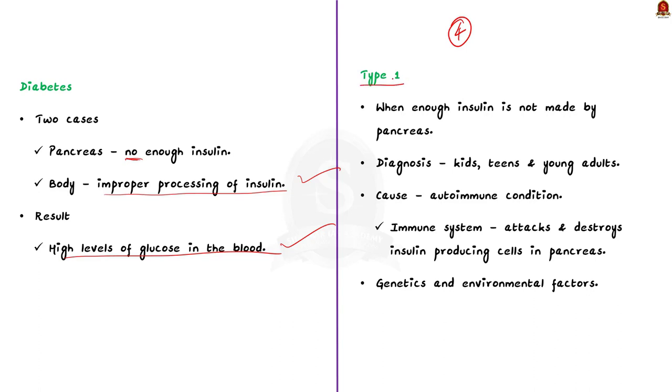First, let us look at type 1. Type 1 diabetes occurs when the pancreas doesn't make enough insulin. This means one has to take insulin every day. It is usually diagnosed in kids, teens, and young adults. Also note that it can happen at any age.